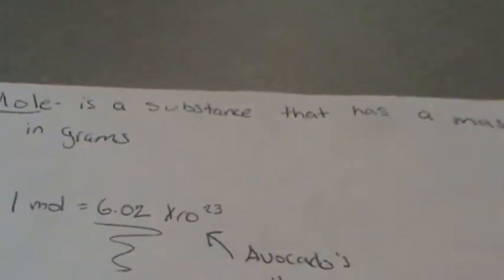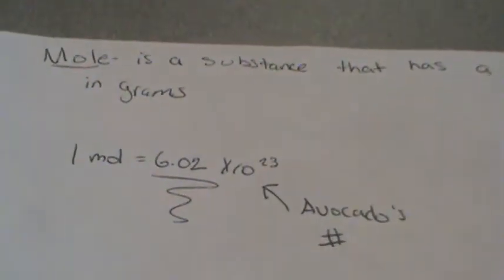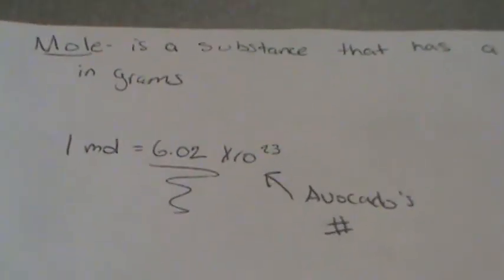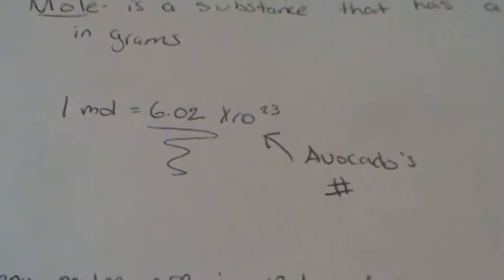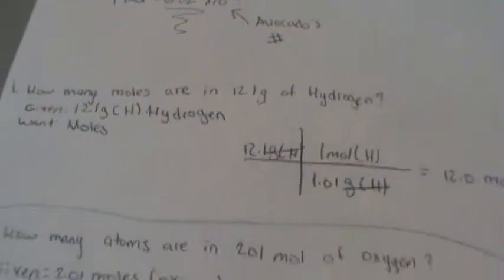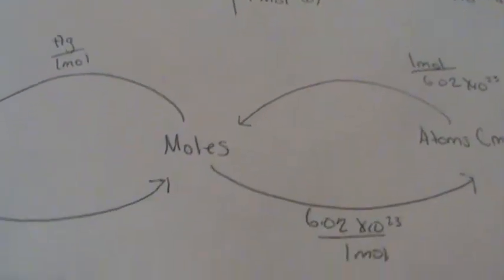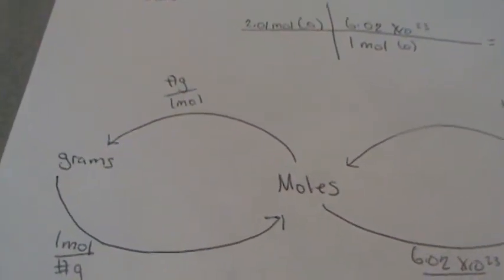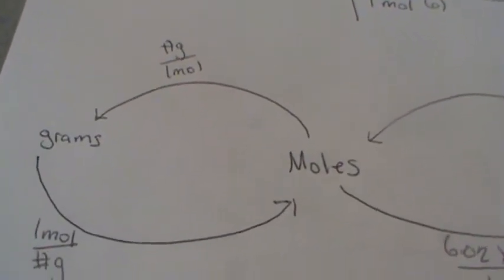Let's review. One mole is a substance that has a mass in grams. We could define this as 6.02 times 10 to the 23rd, which is our Avogadro's number. And we can only do this by following a certain rule, which moles we want to find.